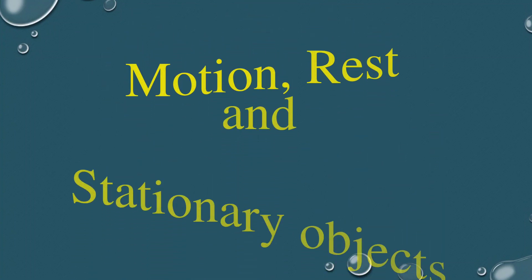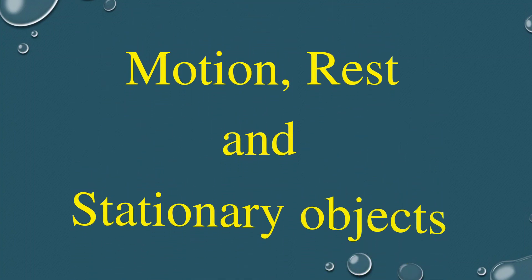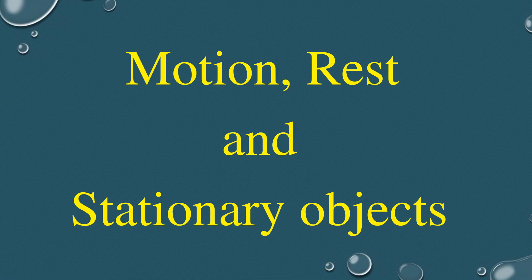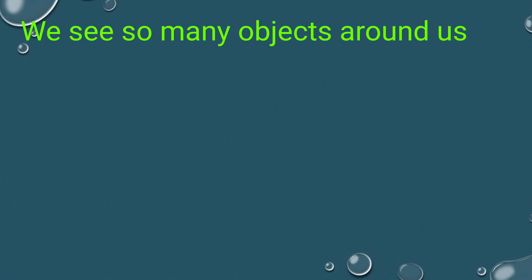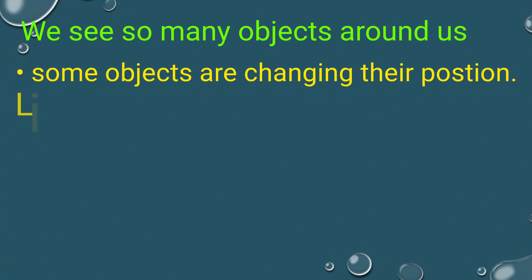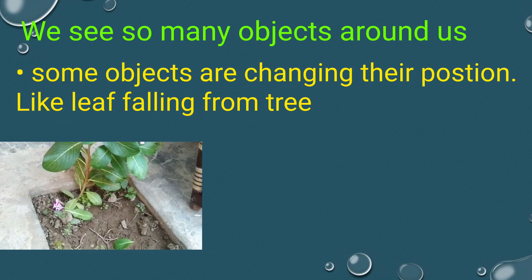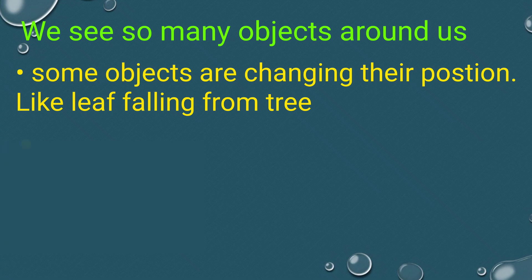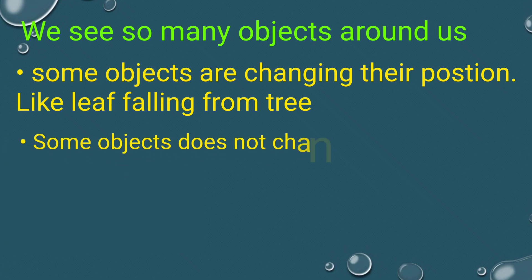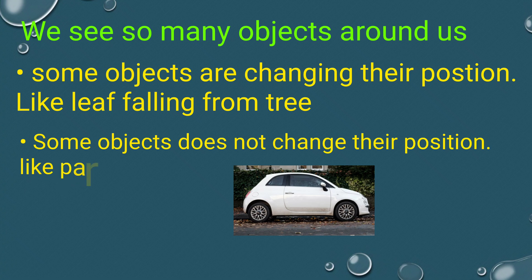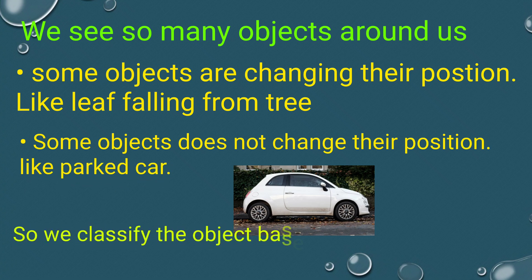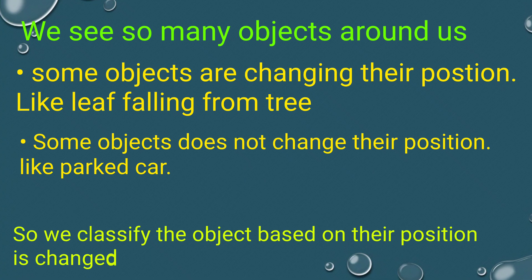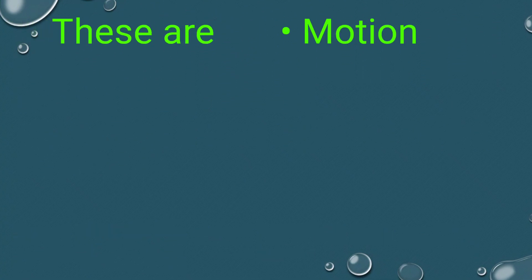Hello friends, welcome to my channel. In this video we discuss motion, rest, and stationary objects. We see so many objects around us — some are changing their position, like a leaf falling from a tree, while some do not change their position, like a parked car. We classify objects based on whether their position has changed or not: they are either in motion or at rest.